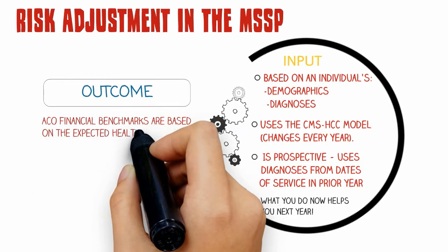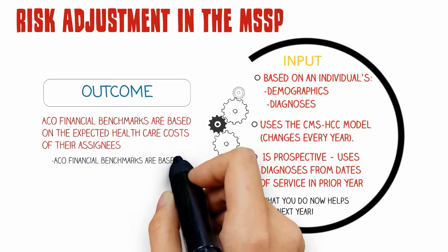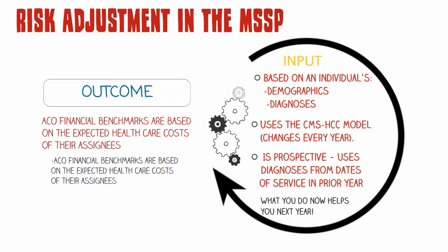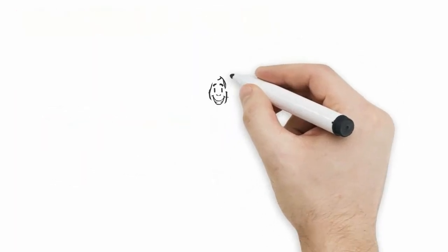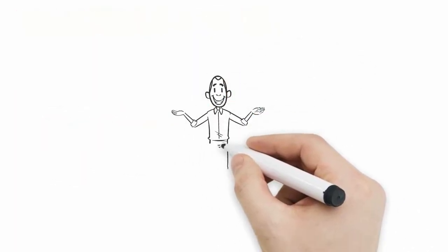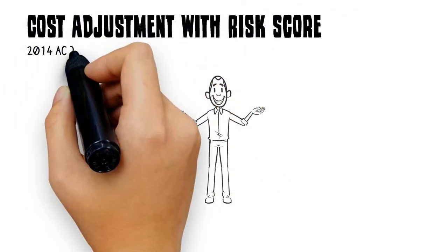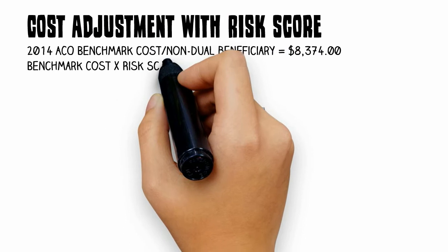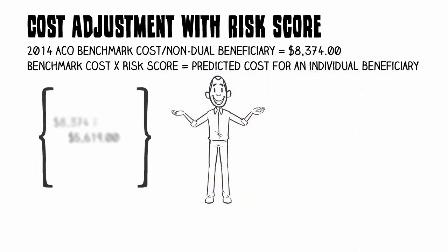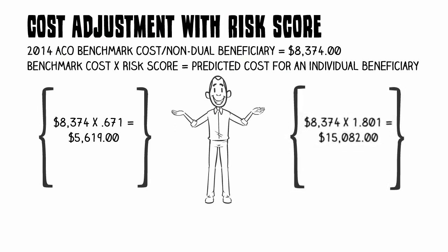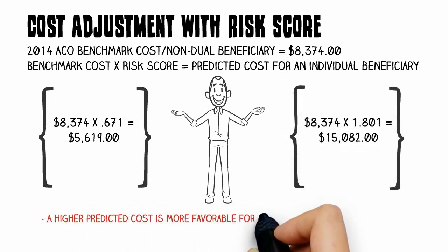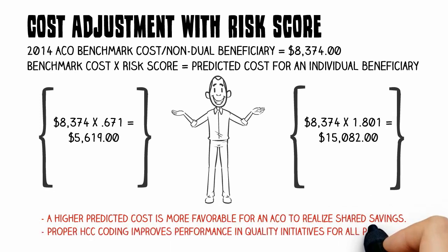So why is this important? The ACO financial benchmarks are based on the expected health care costs of their assignees, and risk scores are directly correlated to health care costs. If our 2014 ACO benchmark cost for a non-dual beneficiary was $8,374 and their risk score was 0.671, their expected cost for the year would be $5,619. If they had a risk score of 1.801, that cost increases to $15,082. This higher predicted cost makes it much easier for an ACO to realize shared savings.